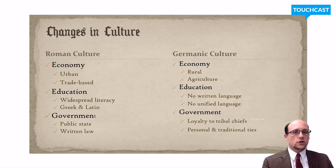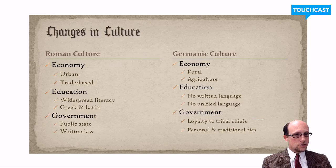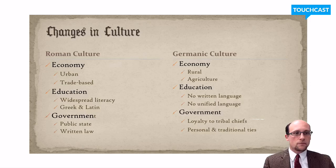Rome was an urban society — a lot of people lived in cities, and those cities were centers of trade. Germanic culture, by contrast, was mostly rural. These people were coming from the countryside, from small villages. If they did trading, it was on a smaller scale and more individual. They were mostly farmers, so most of their survival came from agriculture.